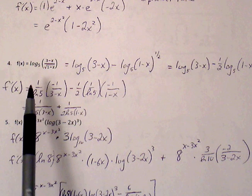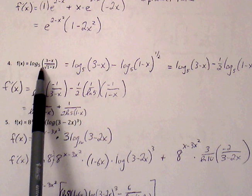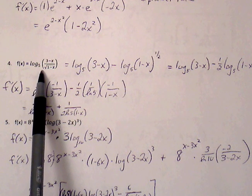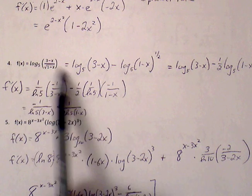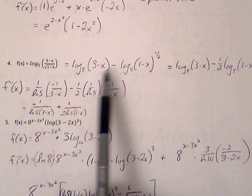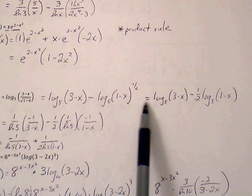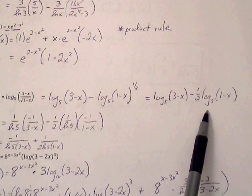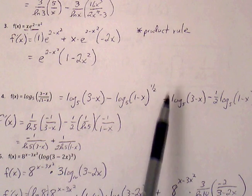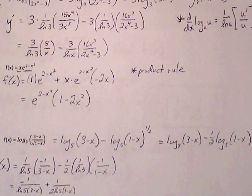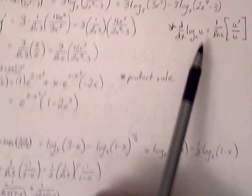Number 4 is similar to number 1 — we can expand the log expression. Keep in mind this is log base 5, so when we find the derivative we have to apply the rule for log base a of u. First step: log of a over b equals log of a minus log of b. Expand further with the second expression, bringing down the 1/2. Now it's cleaner. The derivative for log base a of u is 1 over ln of a — here the base a is 5 — times u prime over u.